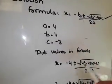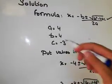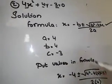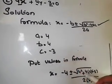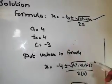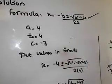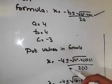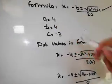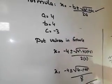x equals minus b — in place of b we put minus 4, because b's value is 4 — plus-minus under root b squared, that is 4 squared, minus 4 times a (which is 4) times c (which is minus 3), upon 2a. In place of 2a we write 2 × 4.